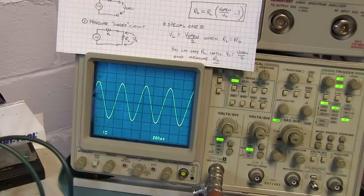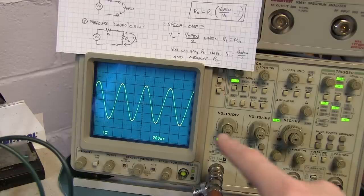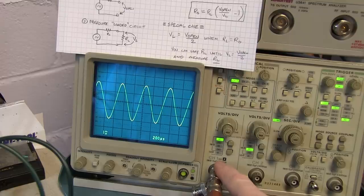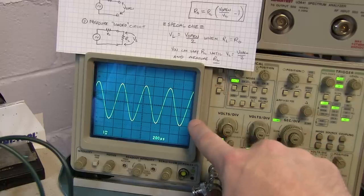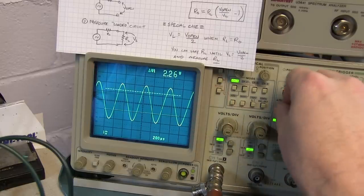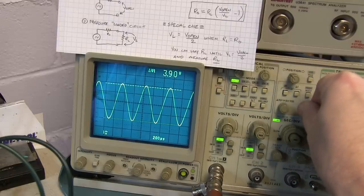So the output of my homebrew signal generator is going into the oscilloscope here. I've got the scope set to a one megaohm input impedance which is going to give me a nice effectively open circuit load and I've got about a two kilohertz signal going in here.